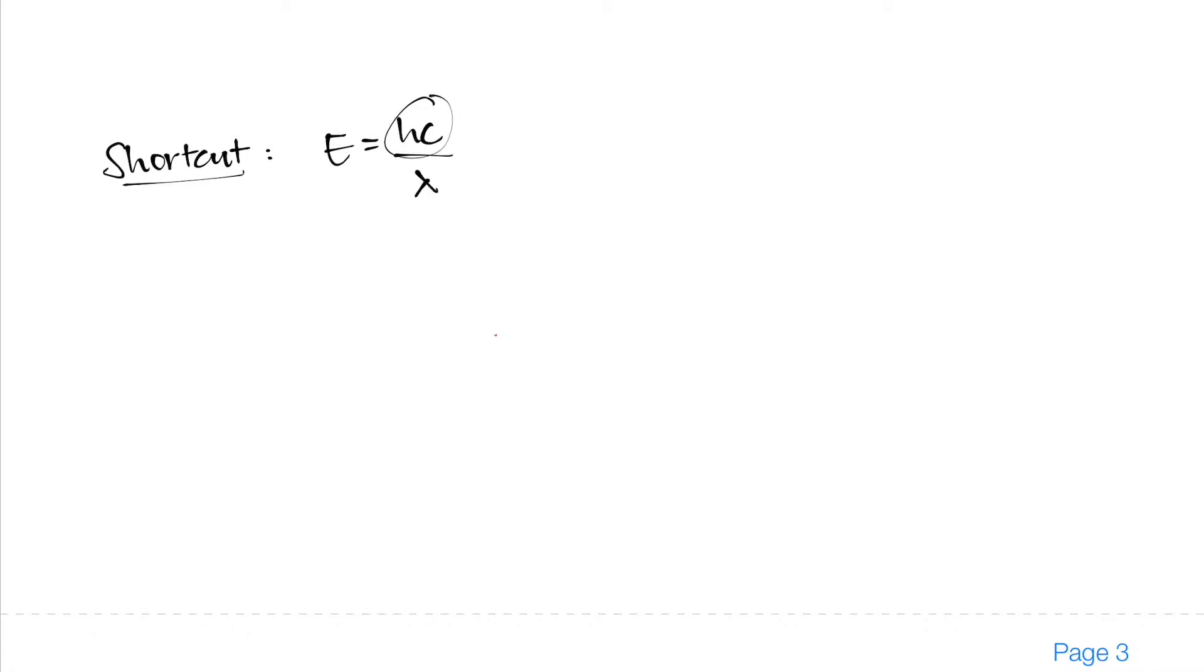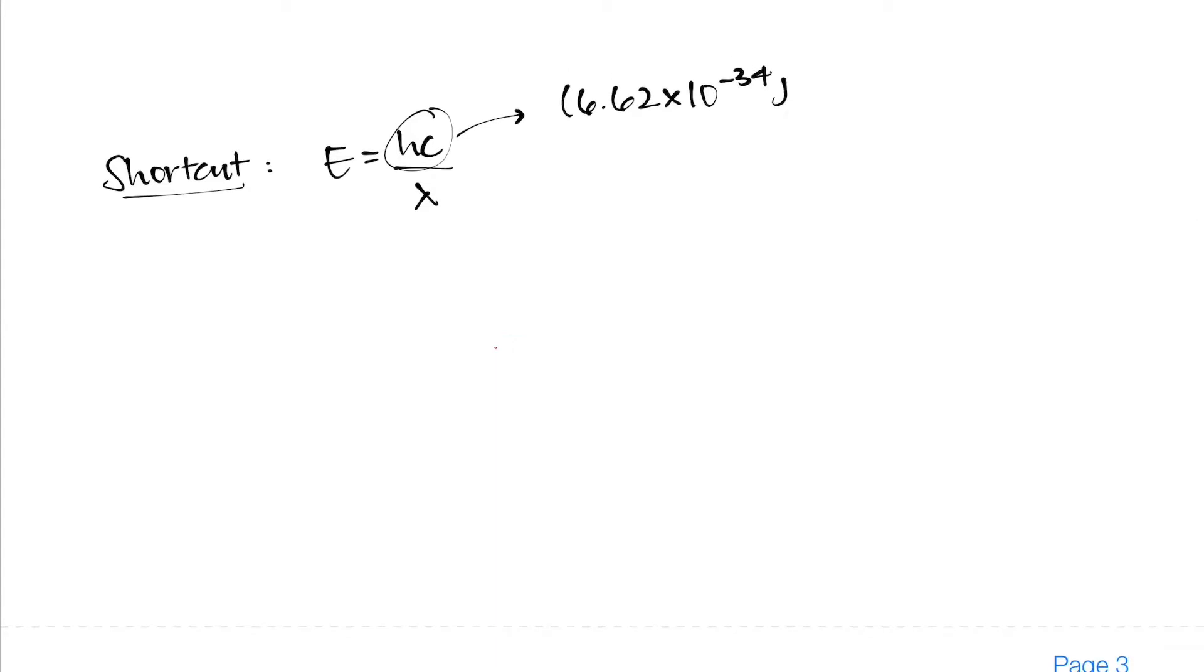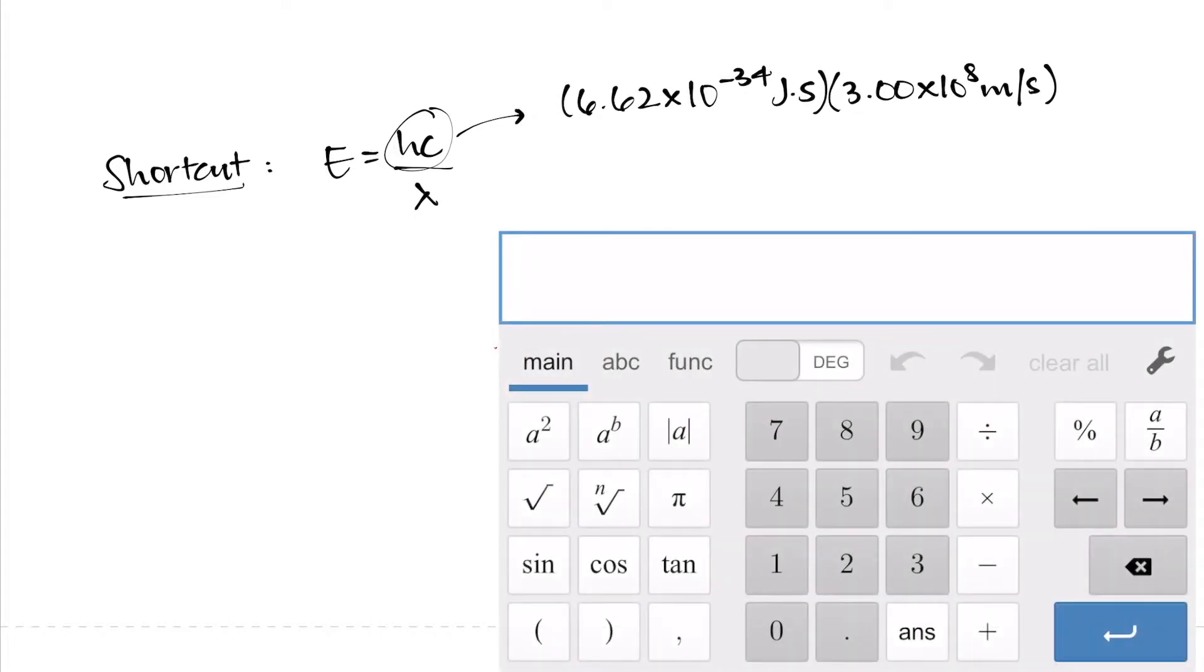H is Planck's constant, so that's automatically 6.62 times 10 to the power of negative 34 joules times seconds, and c is the speed of light, or 3 times 10 to the power of 8 meters per second. So what I can do here is just multiply out those numbers together, noticing that the seconds here cancels with the seconds there since that's one on top, one on the bottom, so they cancel each other out.